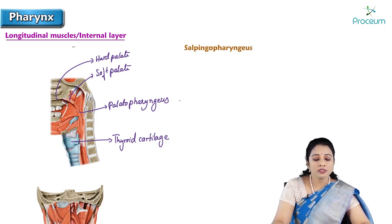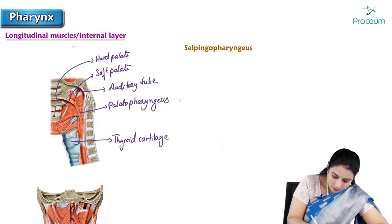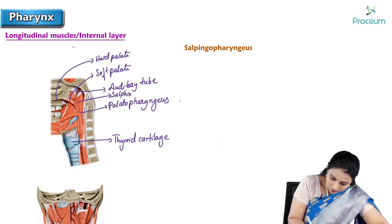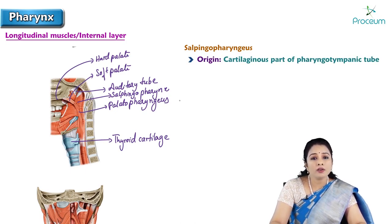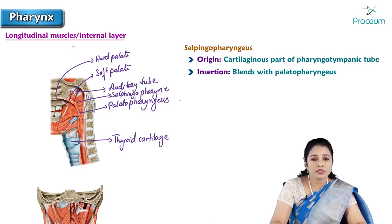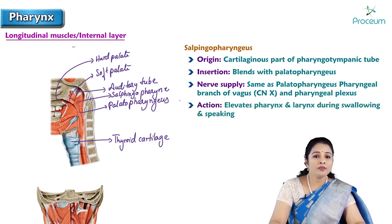The next muscle is the salpingopharyngeus, originating from the auditory tube. Salpingopharyngeus gains its origin from the cartilaginous part of the pharyngotympanic (auditory) tube and inserts by blending with the palatopharyngeus muscle. Its nerve supply is the same as palatopharyngeus — pharyngeal branches via the pharyngeal plexus, a branch of the vagus (tenth cranial nerve). Its action is similar: it elevates the pharynx and larynx during swallowing and speaking.